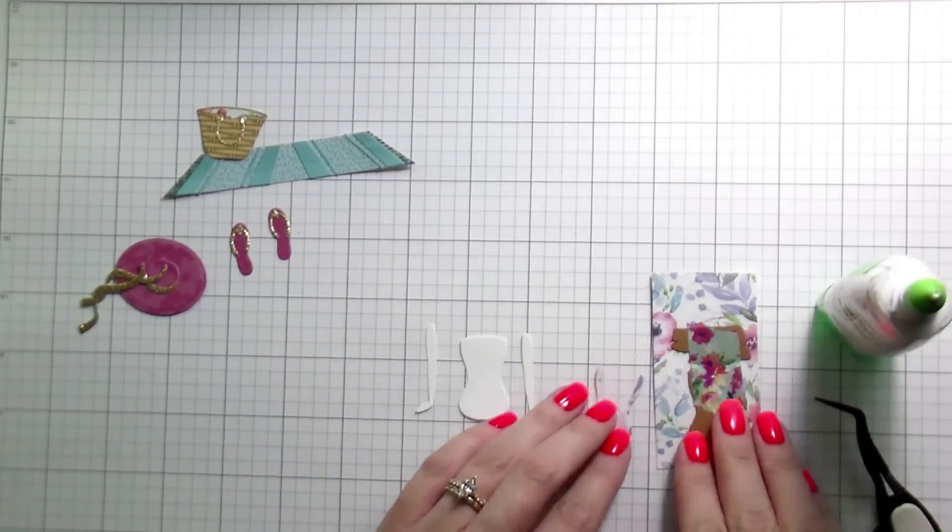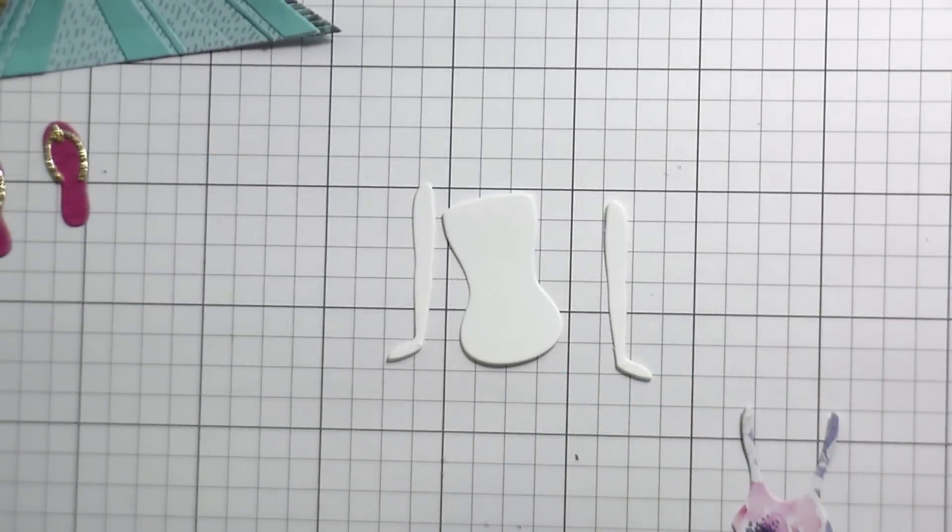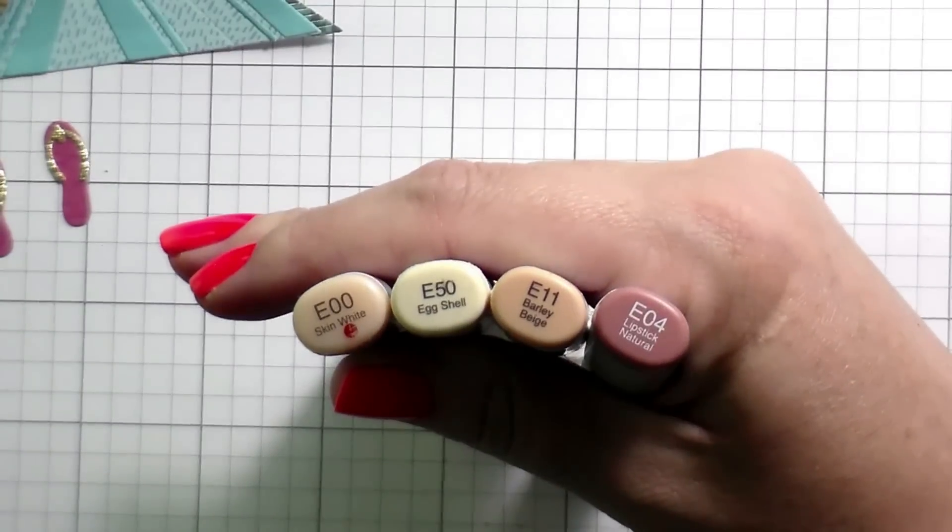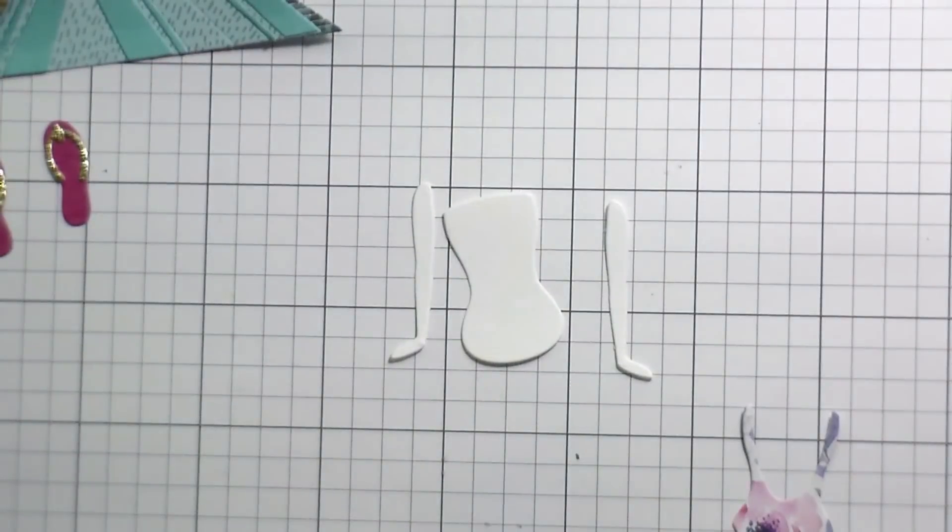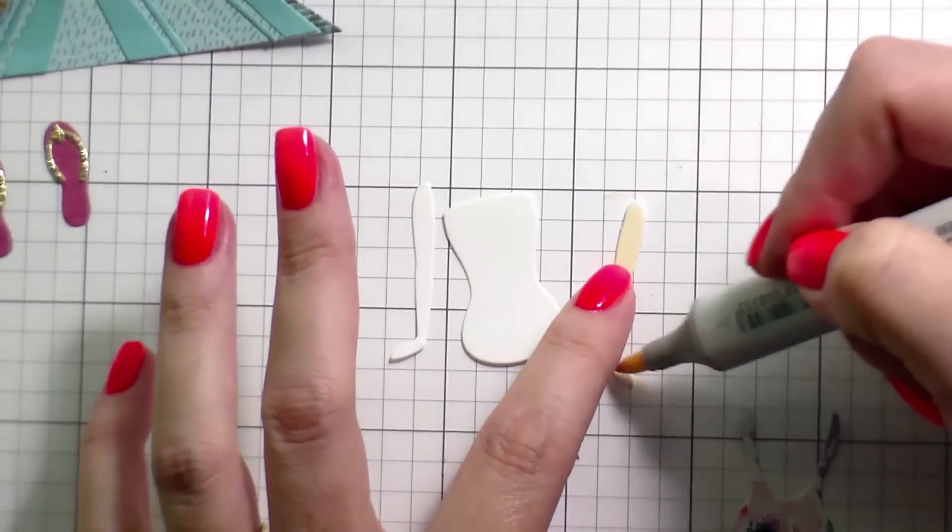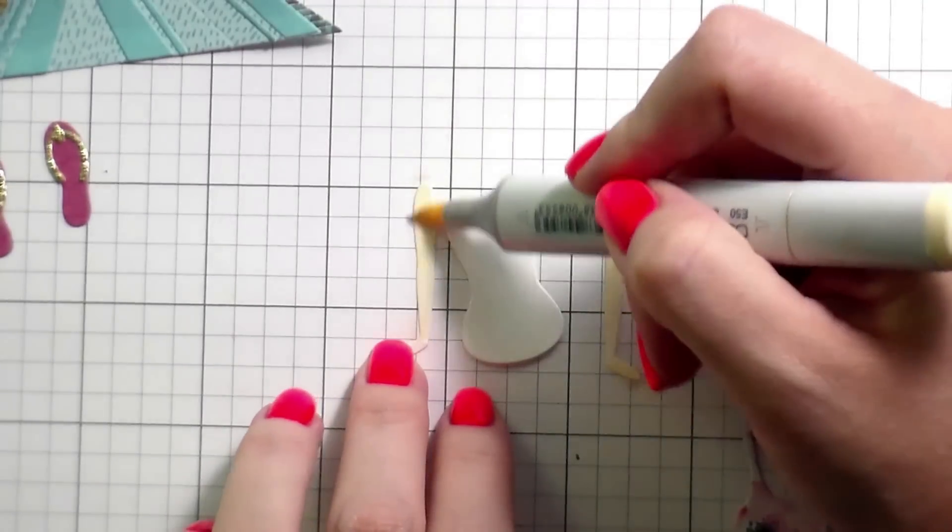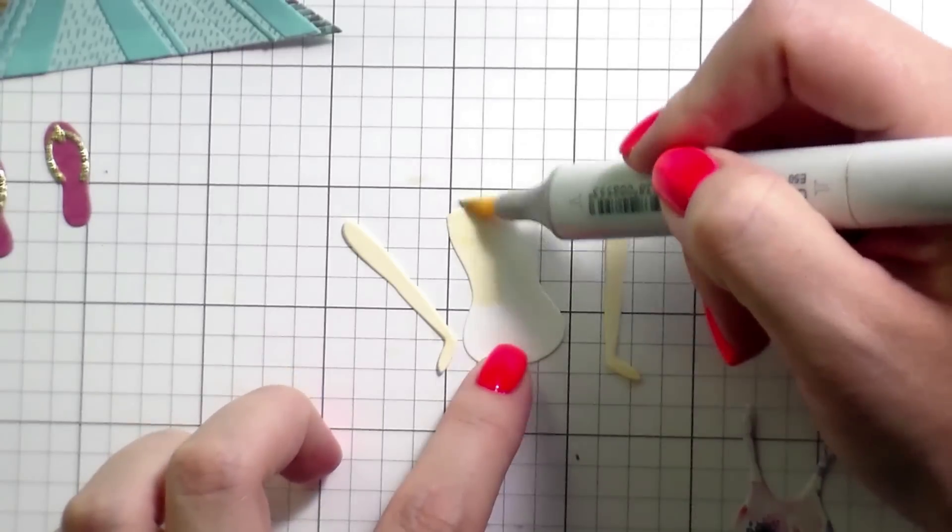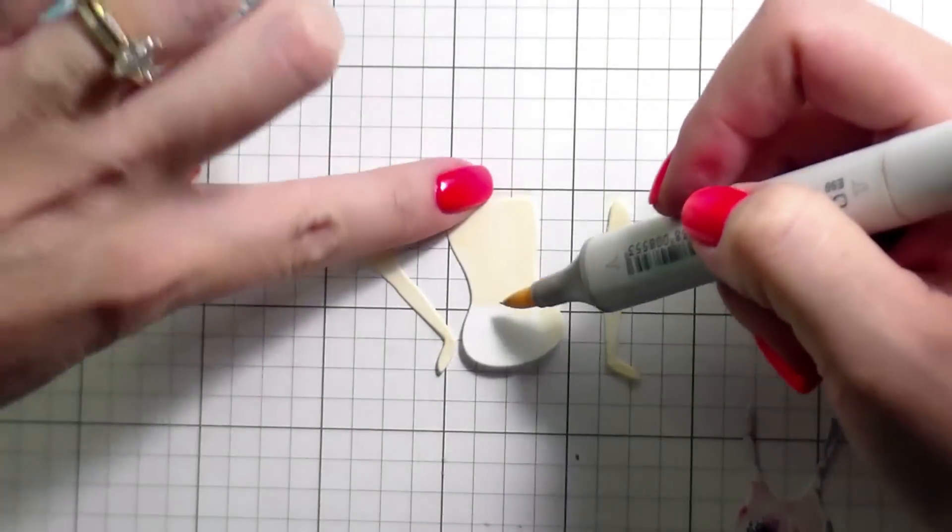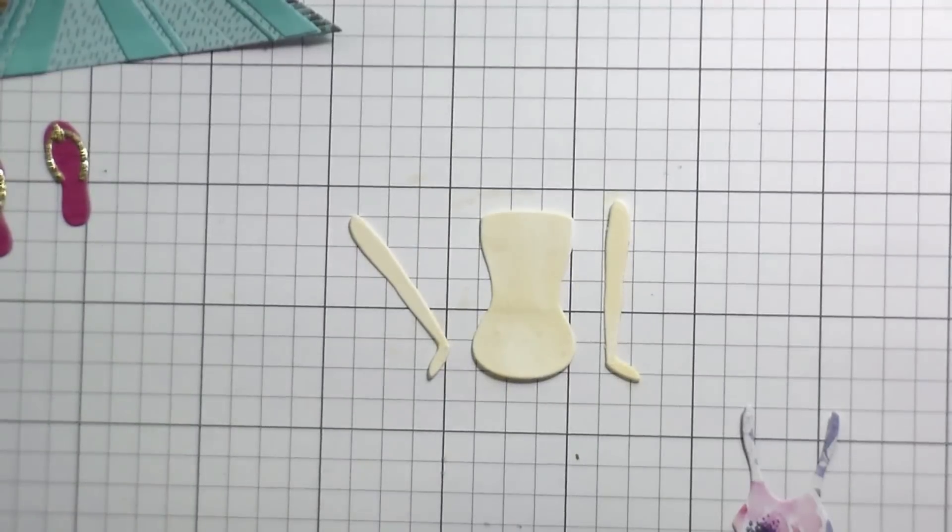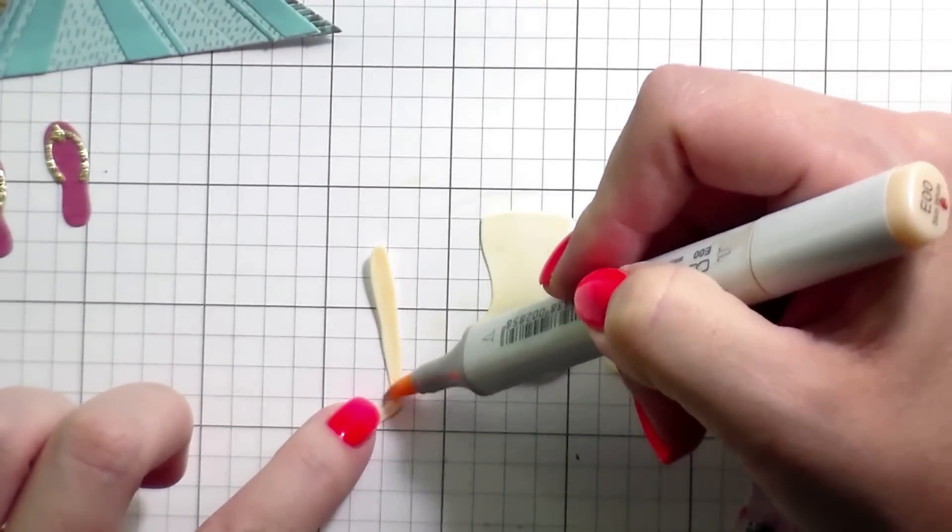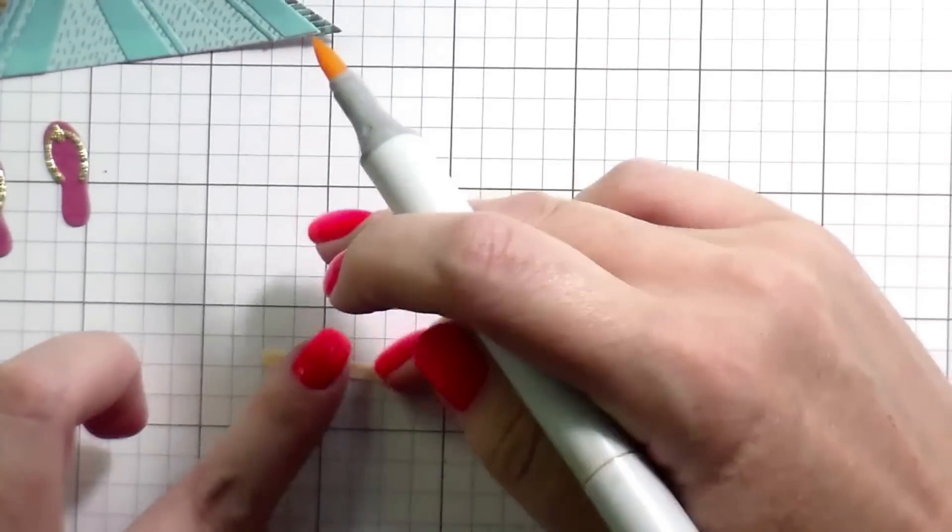So now with most of our things put together, I am going to turn my attention over here to the Copic coloring. You can obviously use whatever skin tones you want. I just went with my go-to traditional skin tones that I use here on my channel. That's just what works for me. These are the ones that I know. I do try to use other skin tones and you can use whatever makes sense for your family. But this is what I grabbed. So for me, it's an E50, an E00, an E11, and an E04.